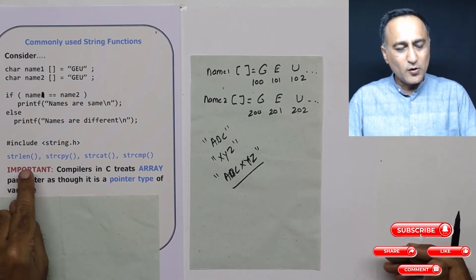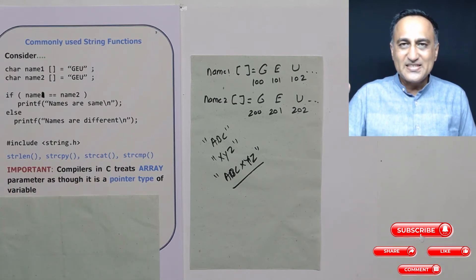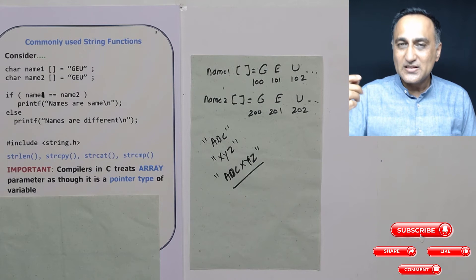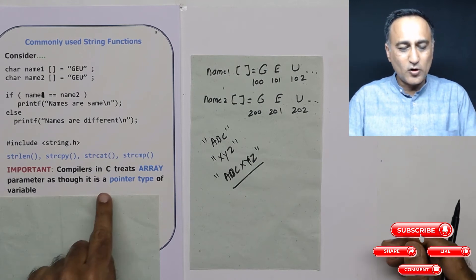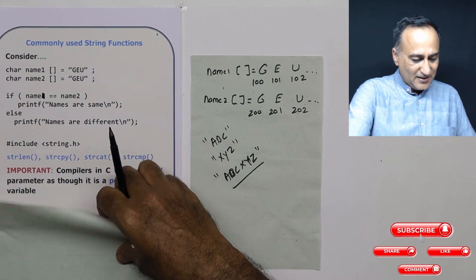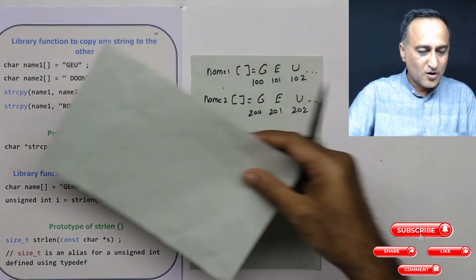Before we proceed to take a look at string length and string copy, you need to understand that in C, arrays are treated as addresses. And so when arrays are passed from the main or the call function to some other function, they are always sent as a pointer type of variable. So let's first take a look at the library function to copy one string to the other.